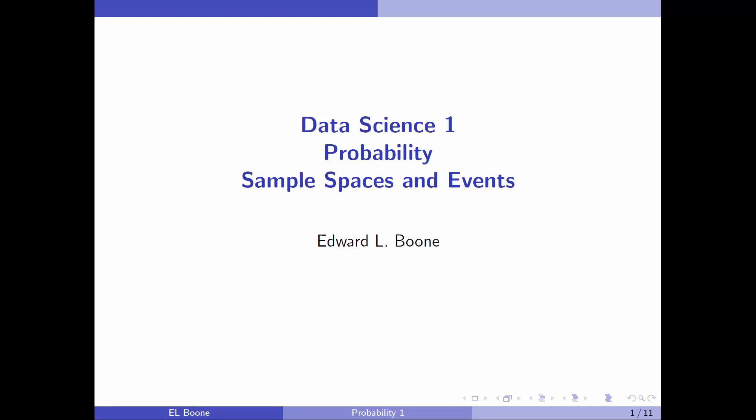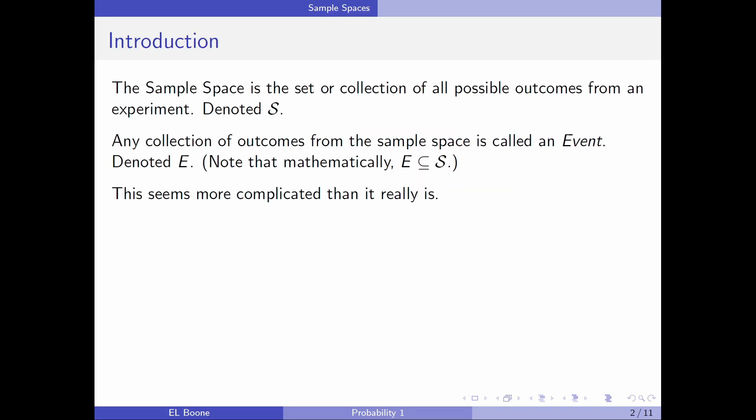Welcome to the video on Data Science 1, Probability. We're talking about sample spaces and events in this video. If you watched the last video, we talked about what a sample space was, and it's a collection of all possible outcomes from an experiment. We haven't really talked about a way to turn these into real numbers yet. We gave a little idea of what a random variable was, but here we want to talk about the sample spaces a little bit more so that we have a better understanding of how probability will work in the underlying part.